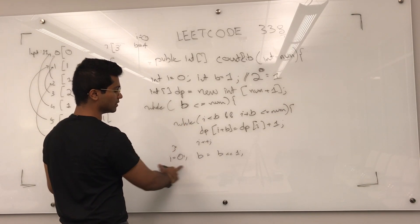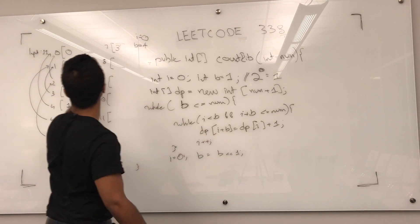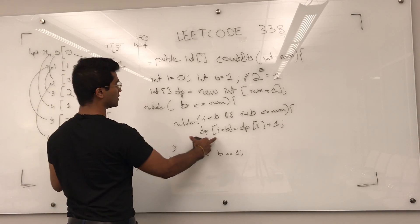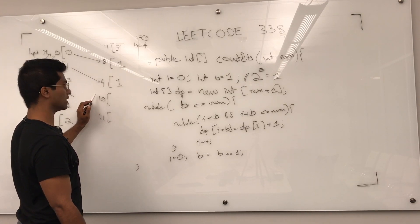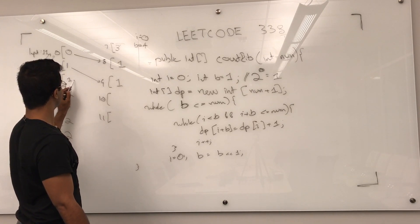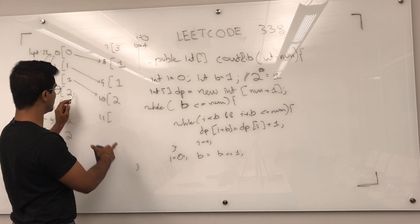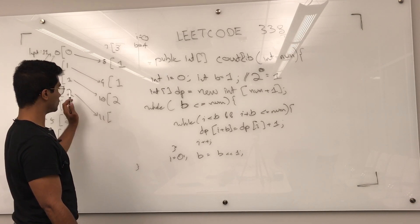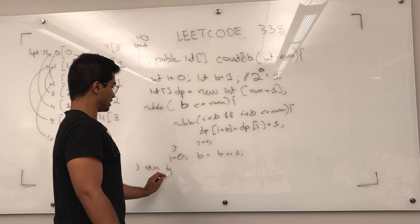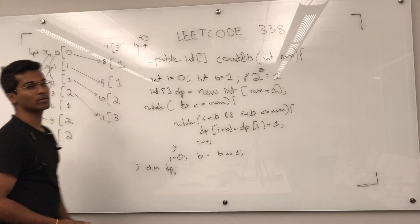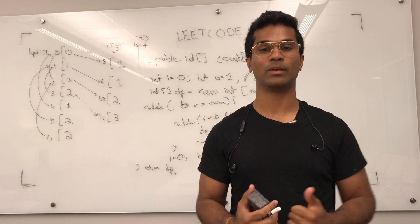i is set back to 0 and b is powered up to 8. dp[8] comes from dp[0] plus 1, dp[9] comes from dp[1] plus 1, dp[10] comes from dp[2] plus 1, and dp[11] comes from dp[3] plus 1. That's the resulting solution — we just return dp. And that's how we solve LeetCode 338. If you liked this video please like, subscribe, and leave your comments below — it'll motivate me to make more and improve my videos. Thank you!